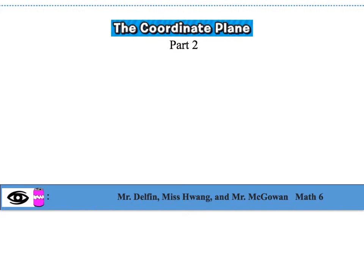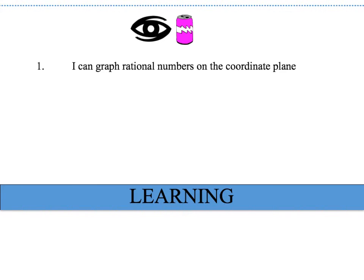Welcome to this lesson on the Coordinate Plane Part 2. Please be sure you have these notes in front of you so that we can begin our lesson. The I can statement for this lesson says: I can graph rational numbers on a coordinate plane.